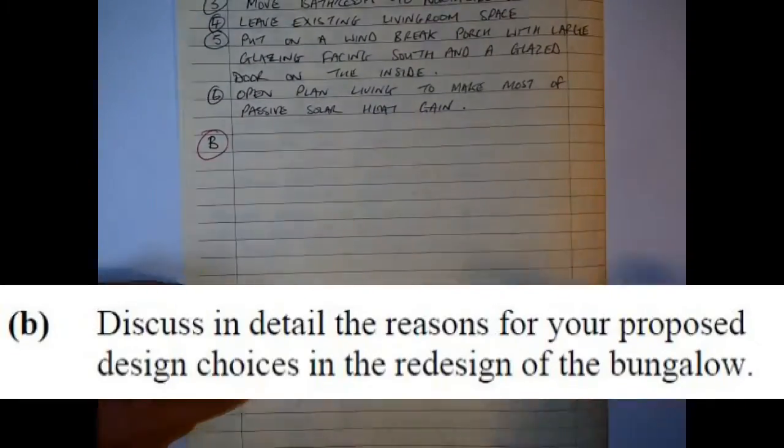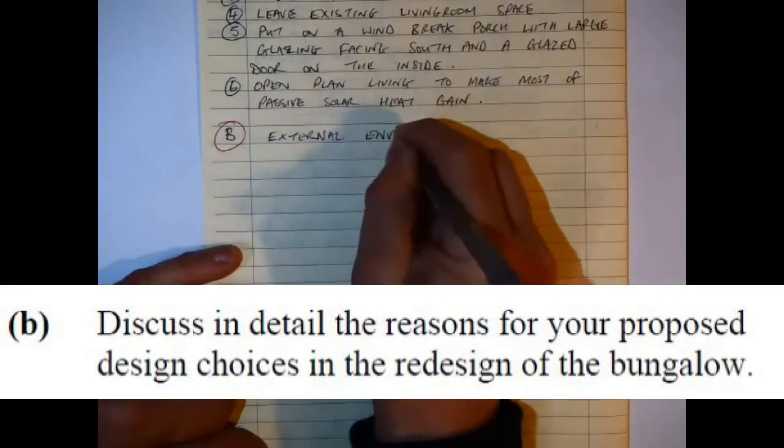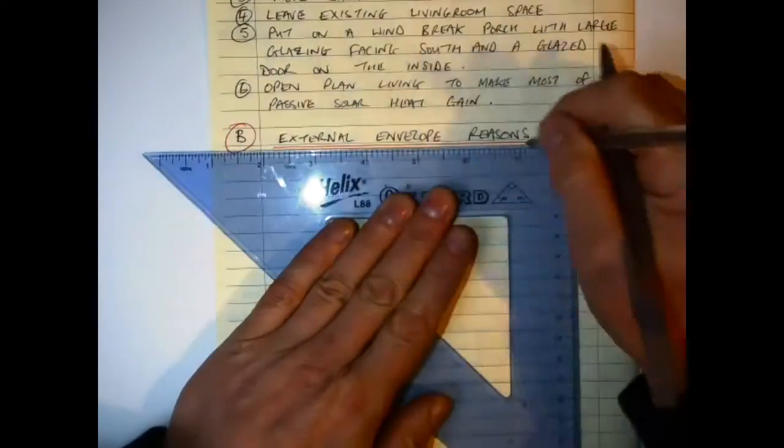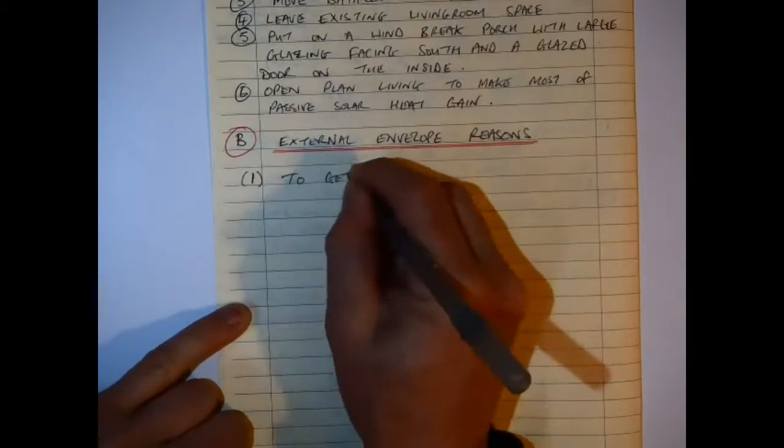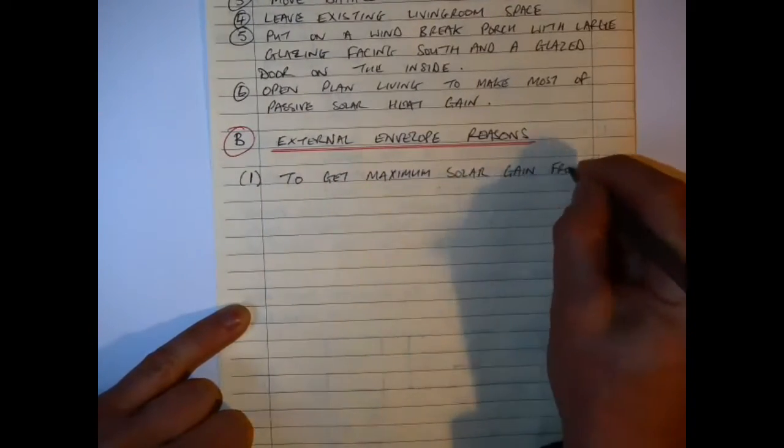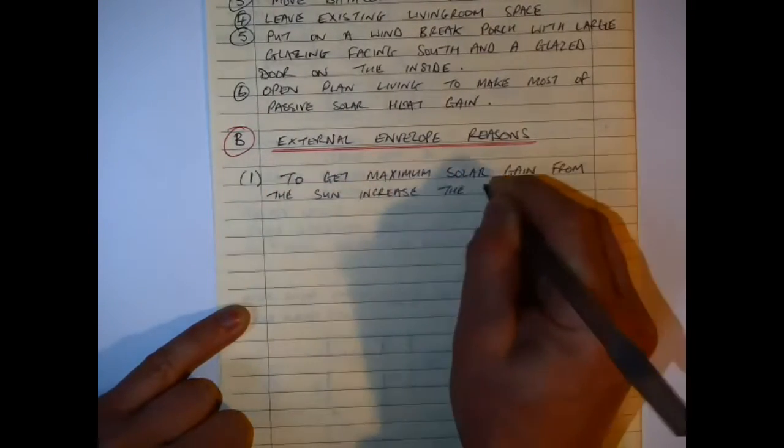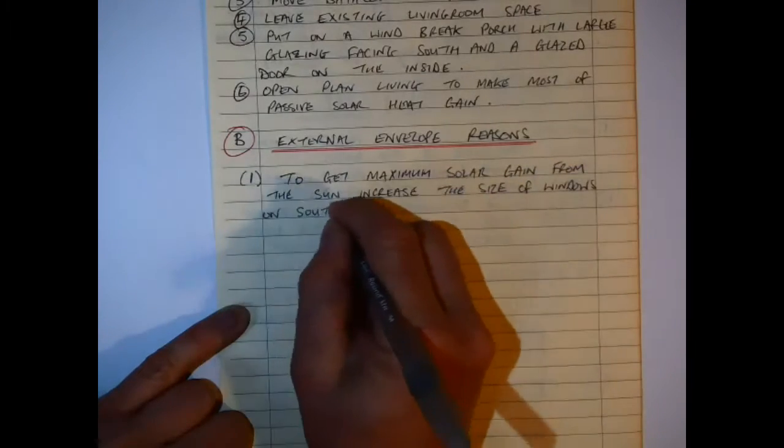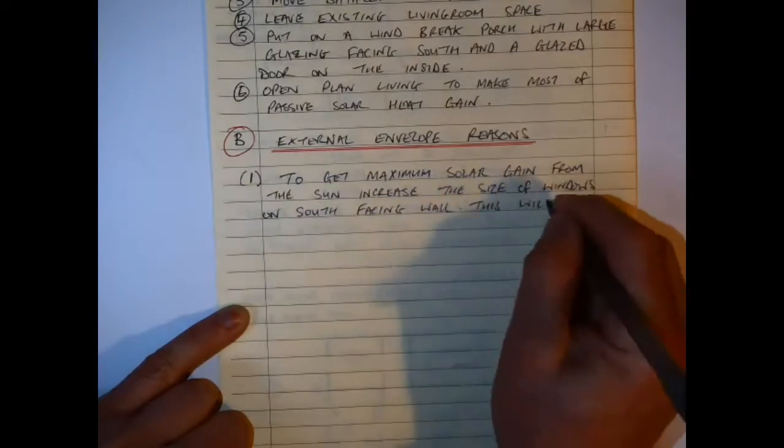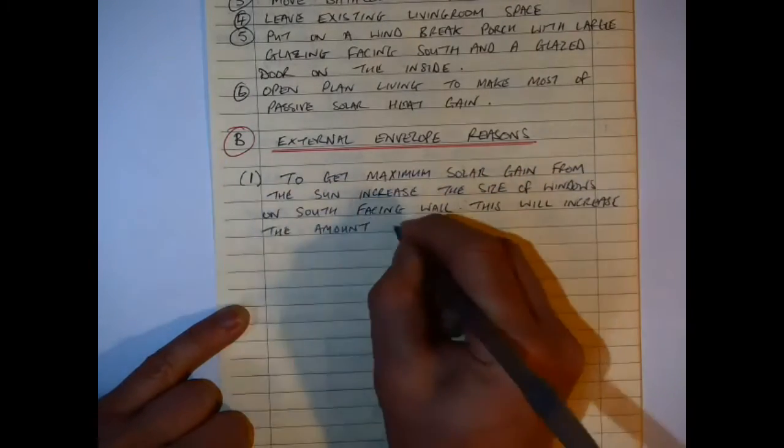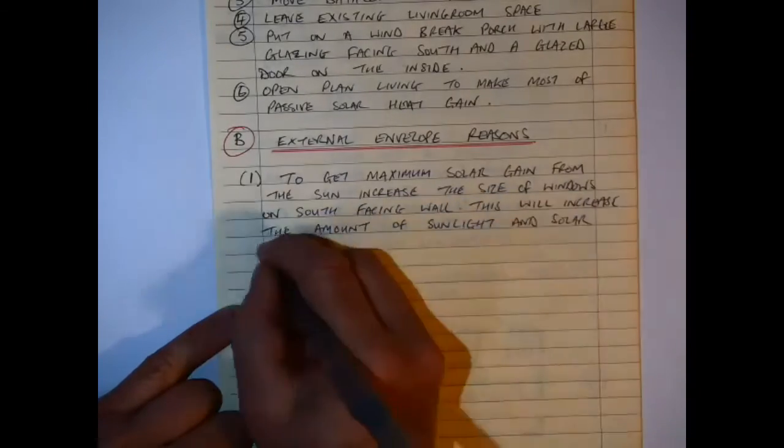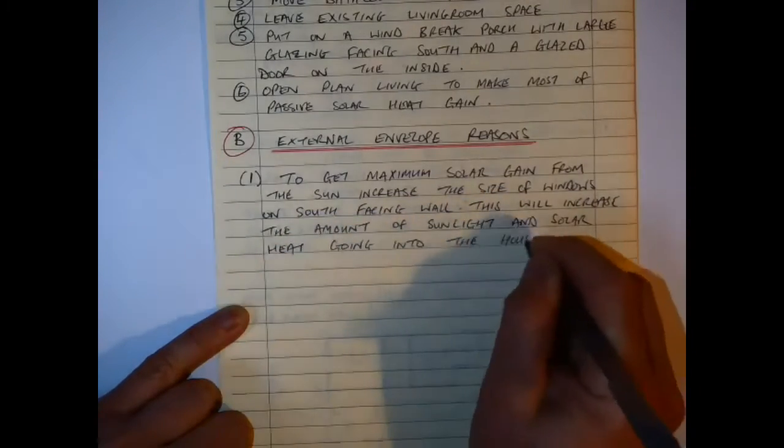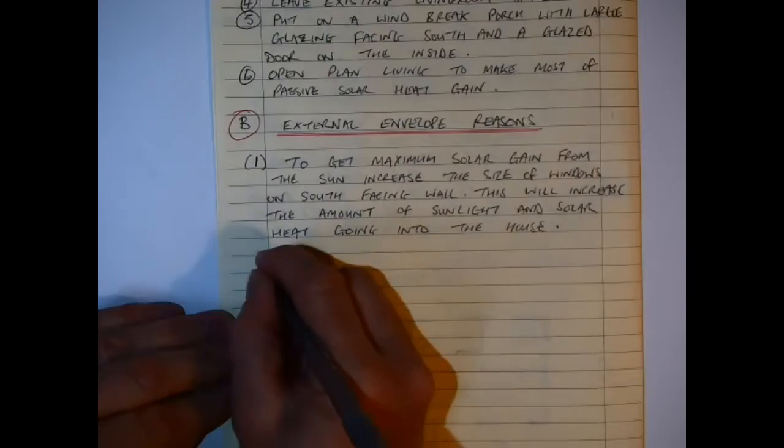So it asks in Part B then to discuss in detail the reasons for my proposed design choices. So a lot of this here is just going to be a written answer. So the first one that I have here is to maximize my solar heat gain from the sun - is to increase the size of the windows in the south facing as I have done in my sketch as well, and the increased amount of sunlight that's going to get in and into the house.